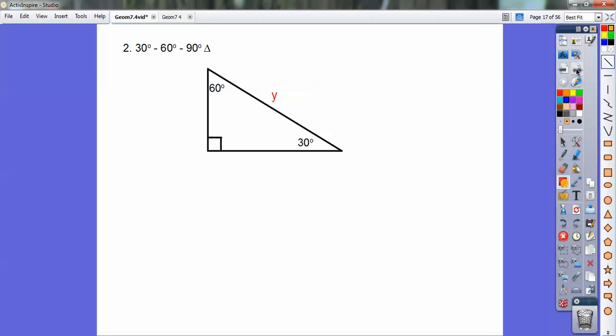Sometimes they'll give you the hypotenuse, so I've got to go backwards and divide by 2 to get the shorter leg, and multiply by root 3 to get the longer leg.